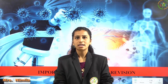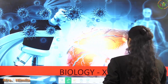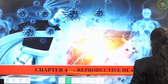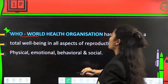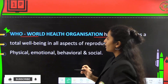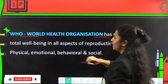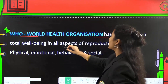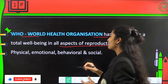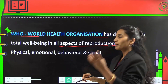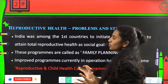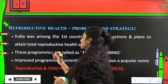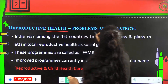Welcome to Education on Clouds. Today in our second PUC Biology class, we will cover the next chapter on reproductive health. The WHO, World Health Organization, has defined reproductive health as a total well-being in all aspects of reproduction, including physical, emotional, behavioral, and social changes.